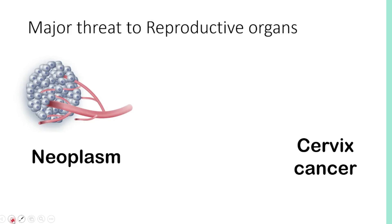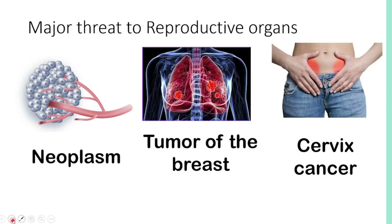Now let's proceed to the major threats to reproductive organs. The first one is neoplasms — tumors of the breast and cervix cancers in adult females and prostate cancer in adult males. Neoplasm is another term for tumor. There are two kinds of tumor: benign and malignant. Benign means it is non-cancerous.